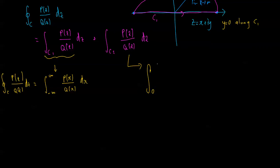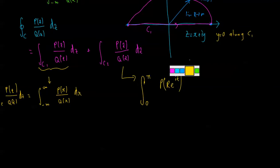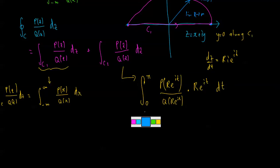So this integral would be 0 to pi, p of r e to the i t on q of r e to the i t, okay, because it's an arc. So we've parameterized z with r e to the i t. But we also have to times by dz dt, remember, which would be r i e to the i t. So this would be multiplied by r e to the i t dt, okay? So what happens as we take the limit as r goes to infinity of this thing?